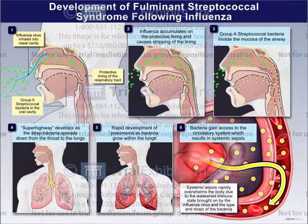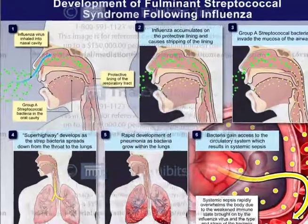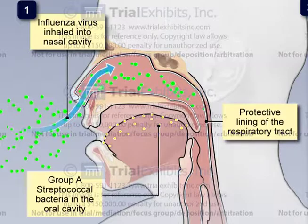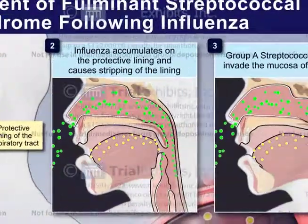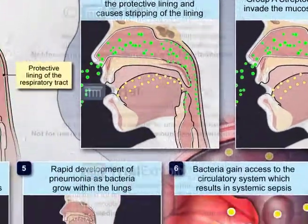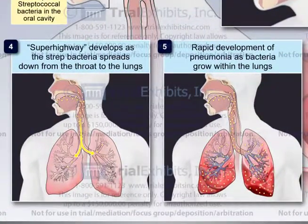Finally, we had to create a series of illustrations to illustrate the development of fulminant streptococcal syndrome following influenza that occurred in this case. These illustrations showed that group A streptococcal bacteria were already present in the oral cavity of this patient as the patient inhaled the influenza virus and the virus began to proliferate in the lining of the respiratory tract. Then, we showed that the influenza strips the protective lining of the mucosa, allowing group A strep to invade the mucosa of the airway and creates a superhighway, allowing the bacteria to rapidly spread through the airway down into the lungs.